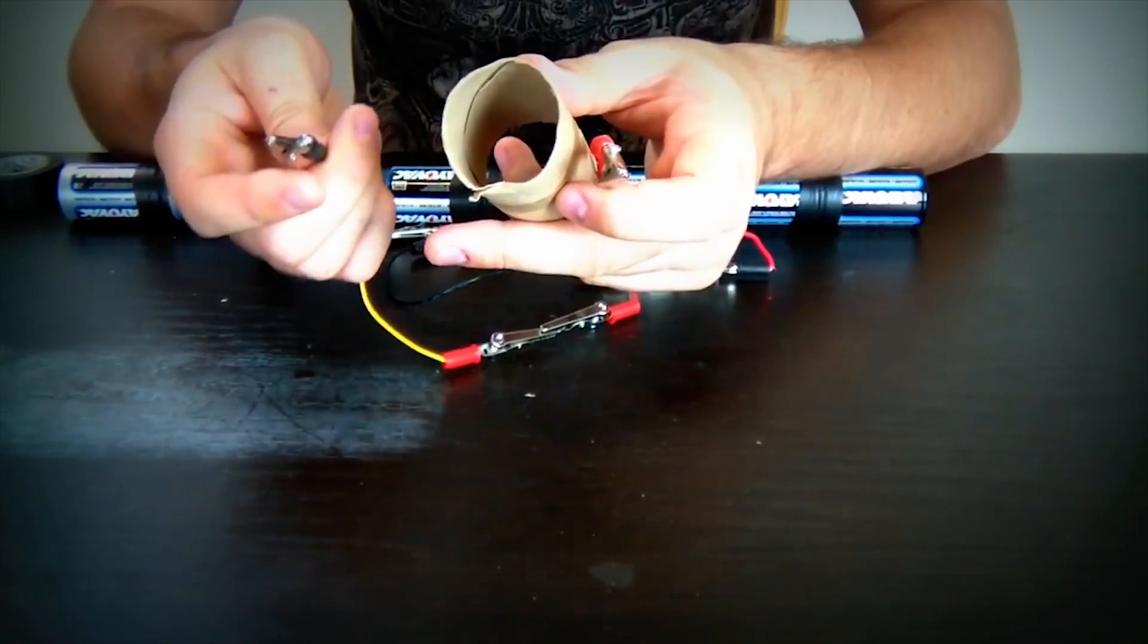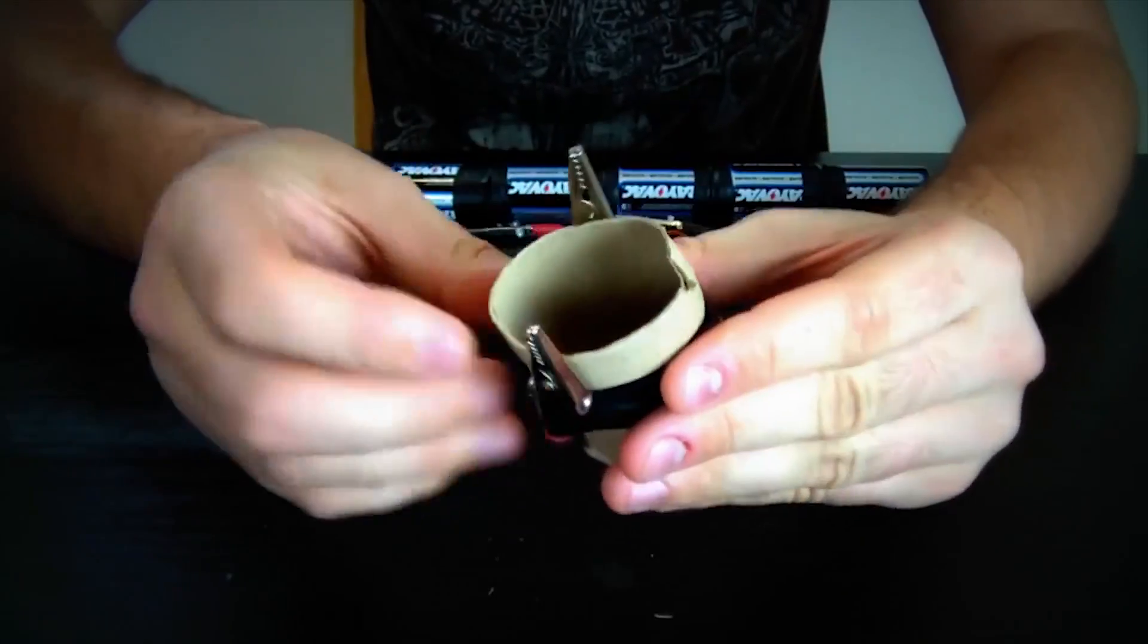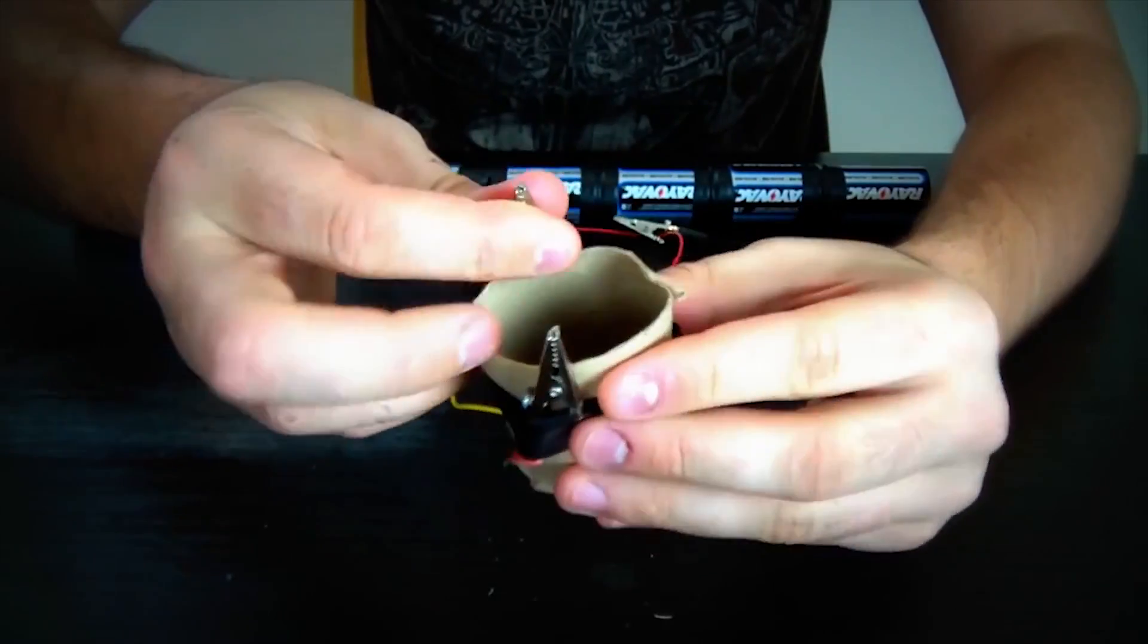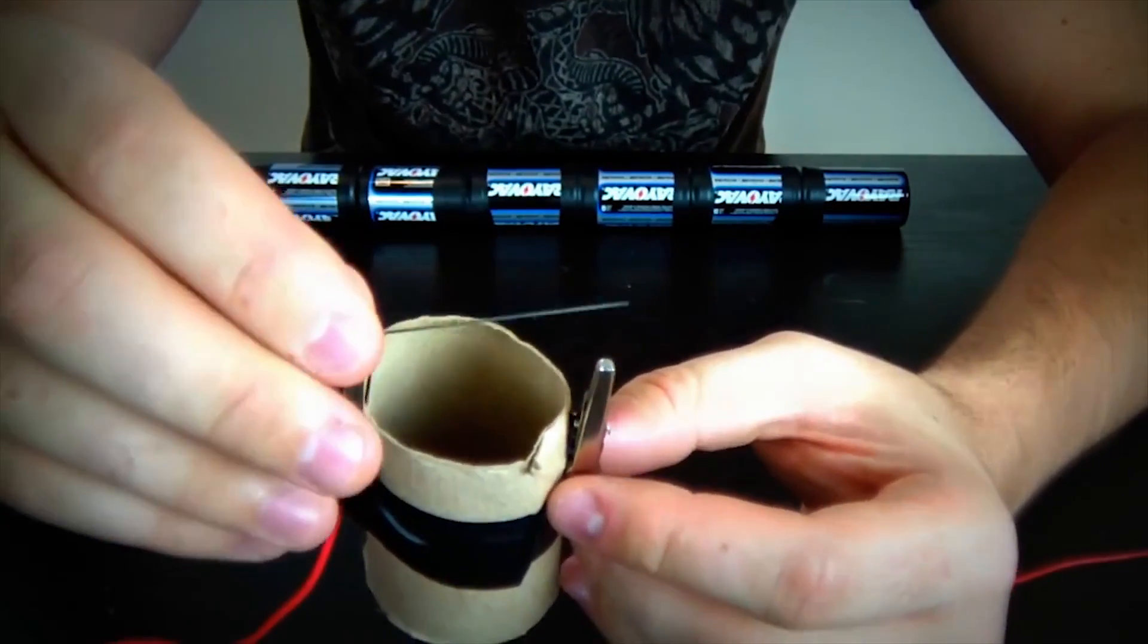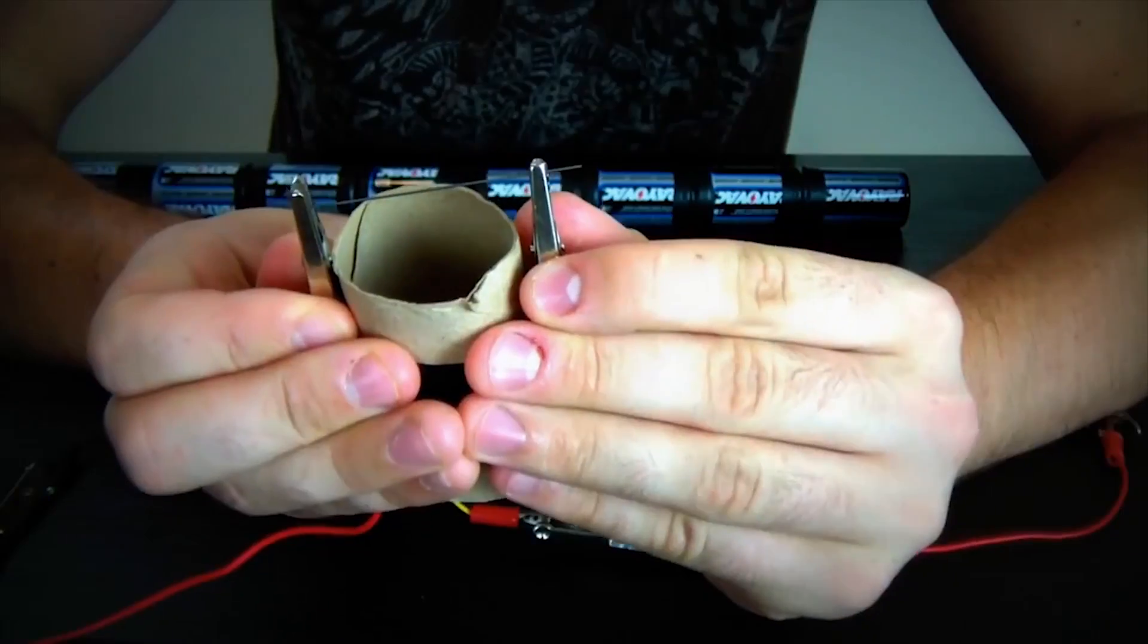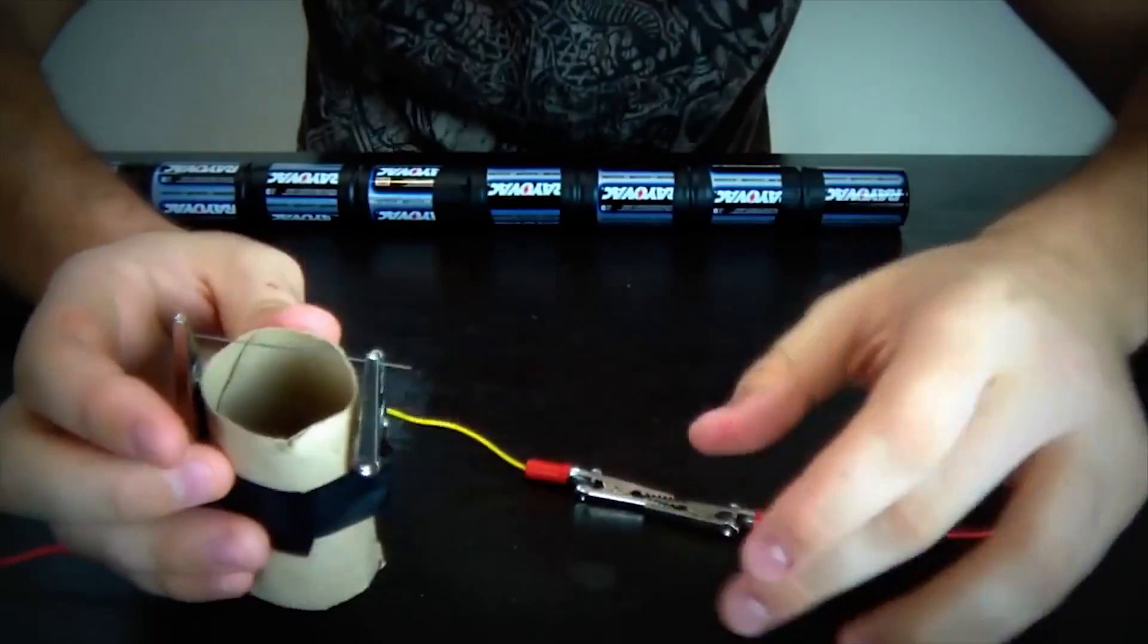Like that. That's tall enough. Then we're gonna get our two alligator wires. Not too far away. Something like that. And then we're gonna get that pencil lid and hook it up between these two alligator wires. Like that.